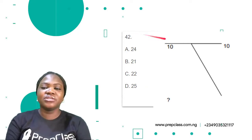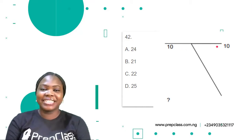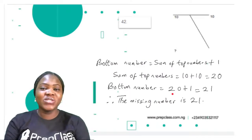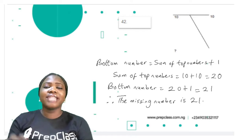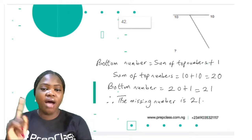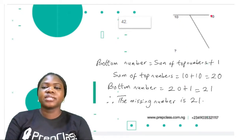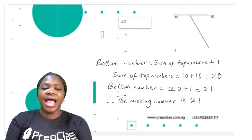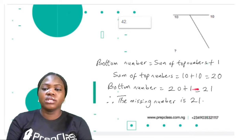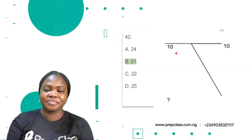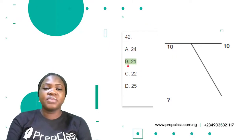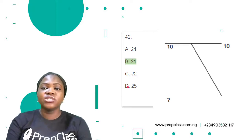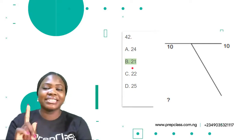Question 42: the two top numbers are 10 and 10; we are asked to find the bottom number. From the samples, the bottom number equals the sum of the top numbers plus 1. The sum of 10 and 10 is 20, and 20 plus 1 is 21. So the missing bottom number is 21. The options are A: 24, B: 21, C: 22, D: 25. The correct option is B — 21.